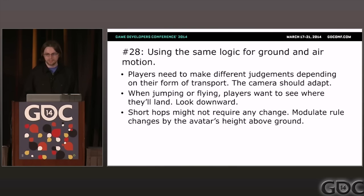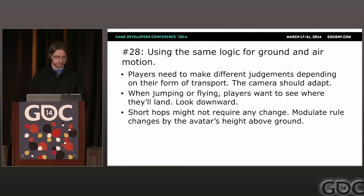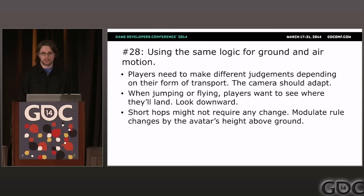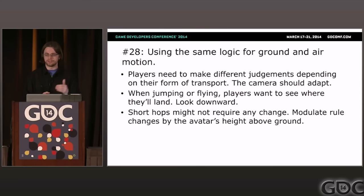Problem twenty-eight: using the same logic for ground and air motion. Depending on the kind of game you have, there may be different kinds of locomotion — in Journey you have running and flying; Shadow of the Colossus has the horse. These different transportation modes take different paths and trajectories through space. In the case of flying in Journey, what goes up must come down, and it's important to always show the player where they're going to land. Especially when you're running out of flying juice, it's important to tilt the camera downwards so you're prepared to land at any time.